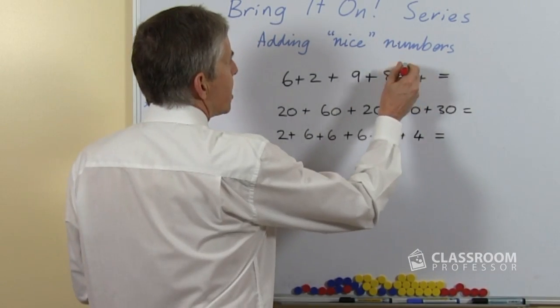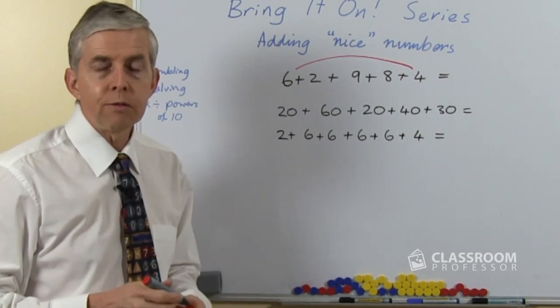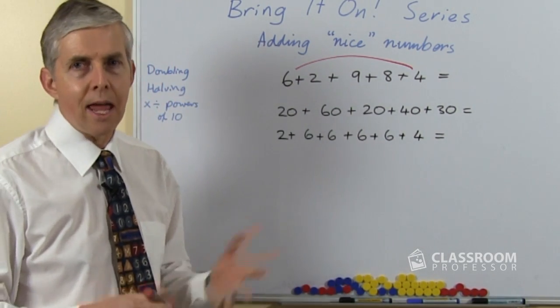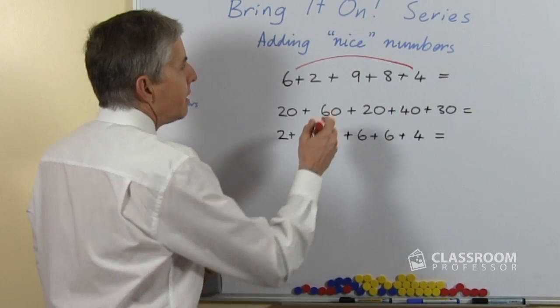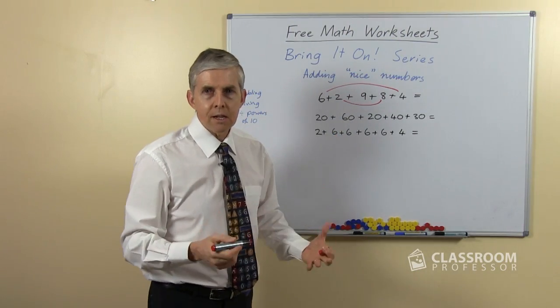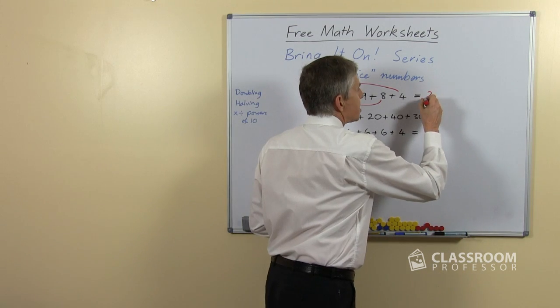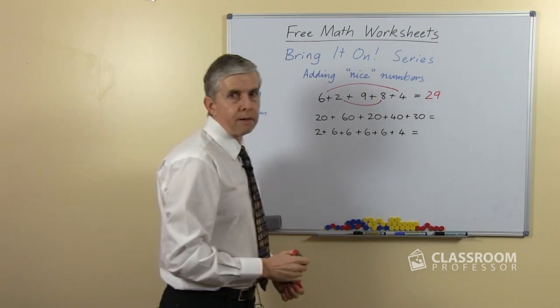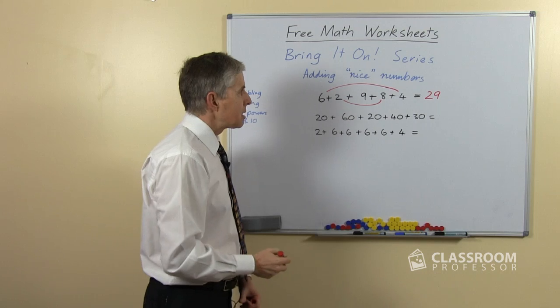So for example, 6 plus 4 is one of the rainbow facts because it adds to 10, so there's 10 straight away, and then we've got a 2 and an 8 and that's another rainbow pair, so there's another 10, and so students should be able to see straight away that's 29. So that makes it a lot easier.